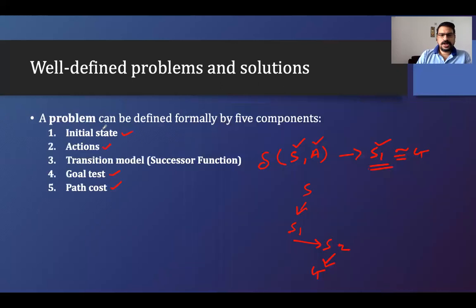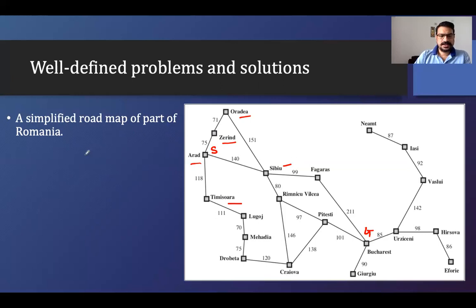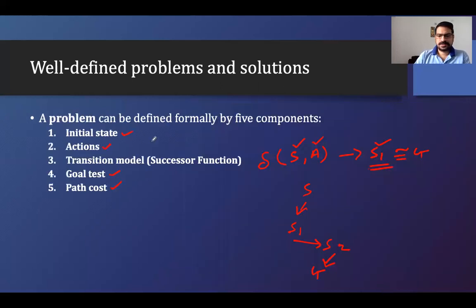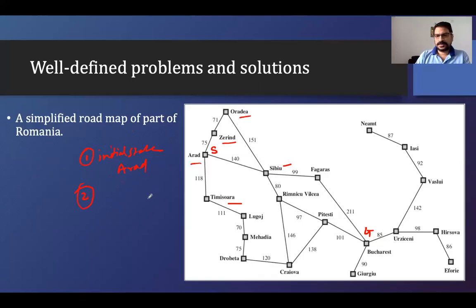The problem will have all five components. The first is the initial state — here my initial state is Arad. The second is action — what actions can we perform? I can move from one city to another city. So the action here is 'move.'